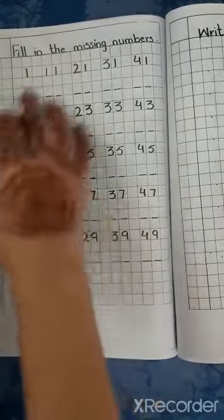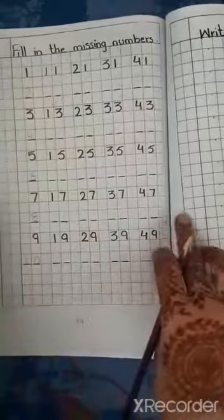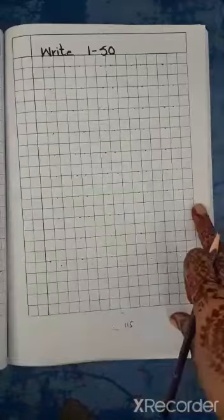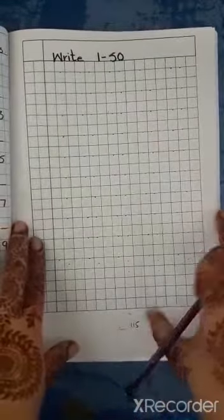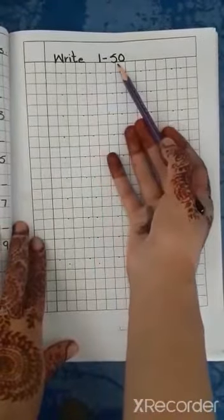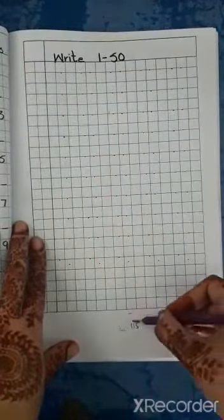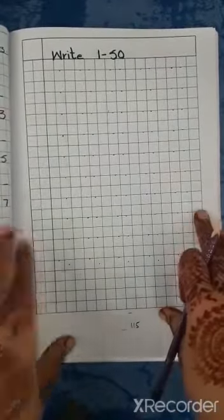Now do the rest of page as your homework. Open page number 115. Write 1 to 50. Page number 115 is also your homework.